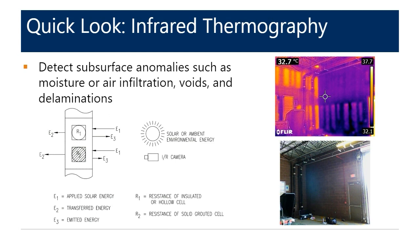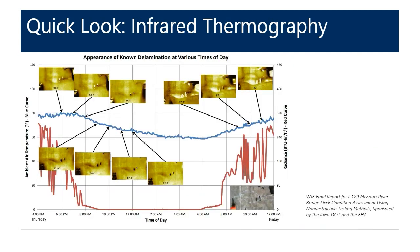When there is a subsurface delamination, it acts as an insulator for the thin layer of material at the surface, allowing that thin layer to gain and lose heat more rapidly than surrounding areas. For example, CMU walls can have grouted or ungrouted cells. When exposed to sun, an ungrouted cell shell heats more rapidly because the air inside acts as a thermal break, resulting in alternating vertical temperature bands. To capture these thermal lag effects, it's important to perform surveys when the test element is rapidly heating or cooling — a delamination is most detectable shortly after sunrise or shortly after sunset.